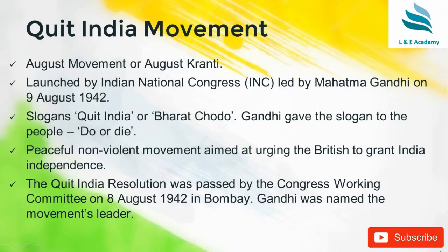The Quit India Movement is also called the August Movement or August Kranti, because it was launched by Mahatma Gandhi under the ambit of the Indian National Congress on 9th August 1942. The slogans given for this movement were 'Quit India' or 'Bharat Cholo', which literally means 'Britishers, leave India'. Gandhiji made this movement more powerful by giving the slogan 'Do or Die' for the people, meaning this was the last opportunity for all Indians to unite and fight the Britishers.